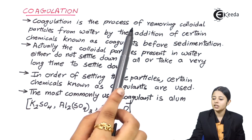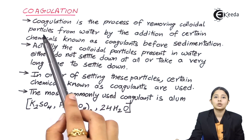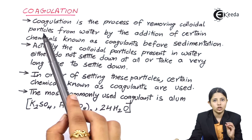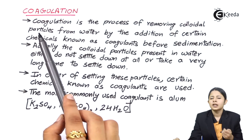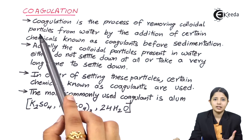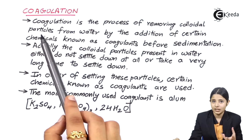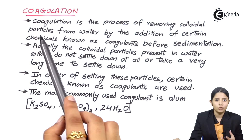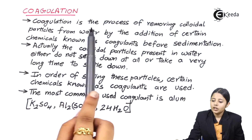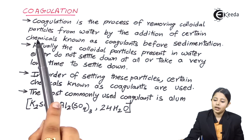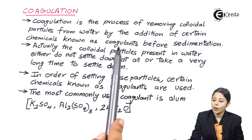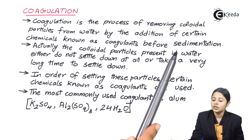Coagulation is the process of removing colloidal particles from water. Colloidal particles are extremely small and fine — some cannot even be seen with the naked eye or felt, but they are still present, and it is very important to remove them. Coagulation removes colloidal particles by the addition of certain chemicals known as coagulants, before sedimentation.